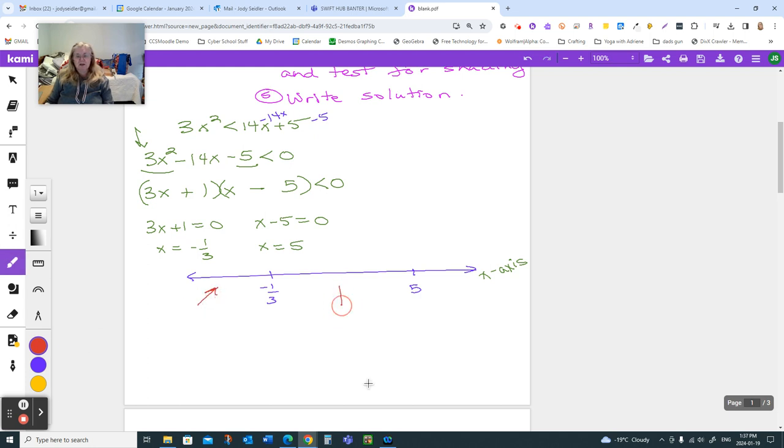We have to test this region, and this region, and this one. So all we need to do is pick any number that is in this part of the number line. So a number smaller than negative one-third, and a nice one is just negative one. I am going to put it back into the original quadratic that we had up here. And I'm going to put a question mark on the end, because what I'm trying to do is find out, is this true? Negative one squared times three is just three. And I want to know, is that less than, and if I do the math on the other side, I get negative nine. Is three less than negative nine? No, it's not.